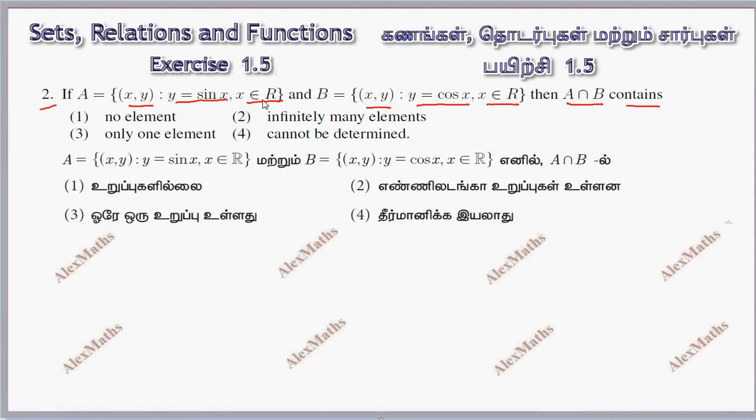Now, for every value of x, every value of y is equal to R. That is, set A and set B are sets of ordered pair elements. Okay, now we use two methods. I solve this problem using the graphical method.